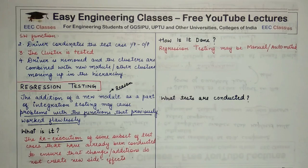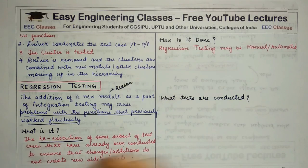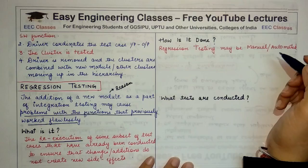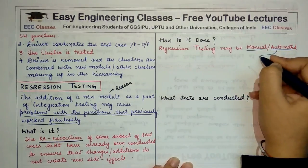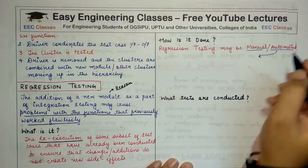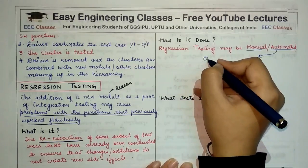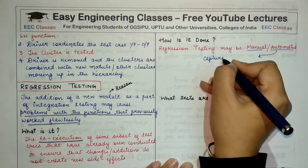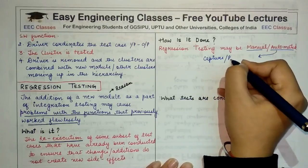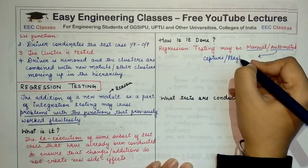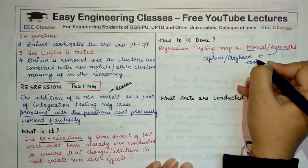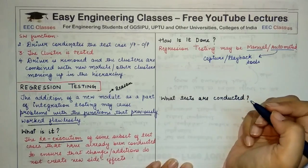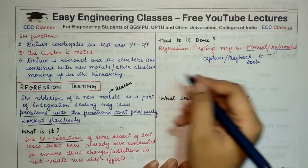So how do we perform regression testing? Regression testing can be done in an automated way or manually. And when automated regression testing is done, it is done with the help of capture/playback tools. Capture/playback tools basically capture the test cases and their results.